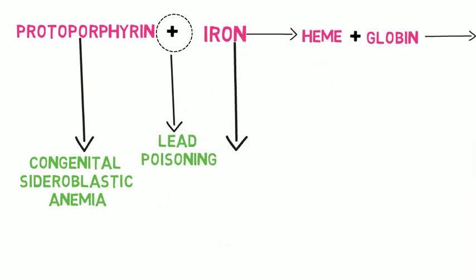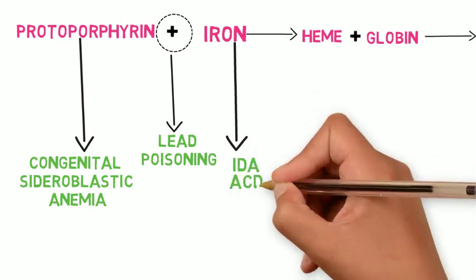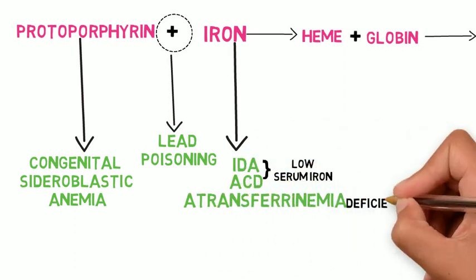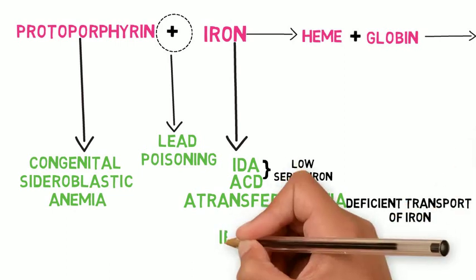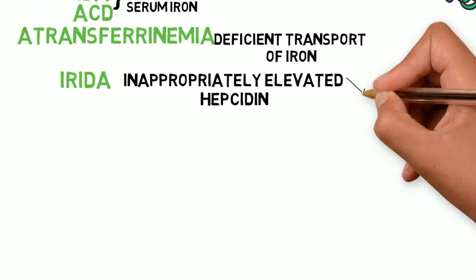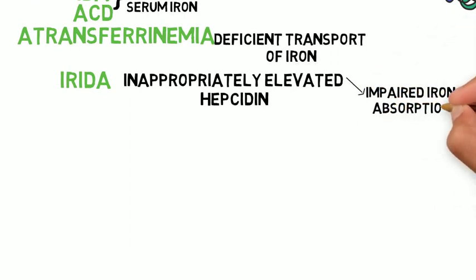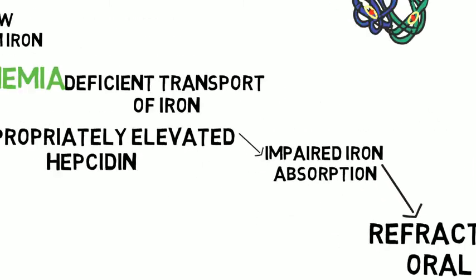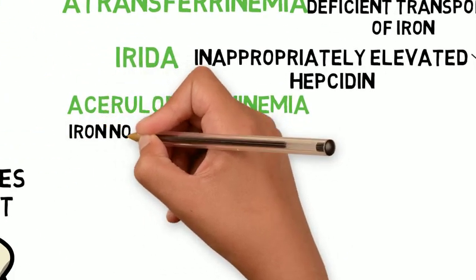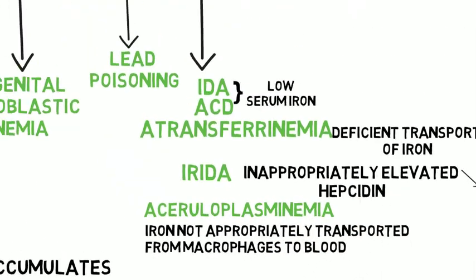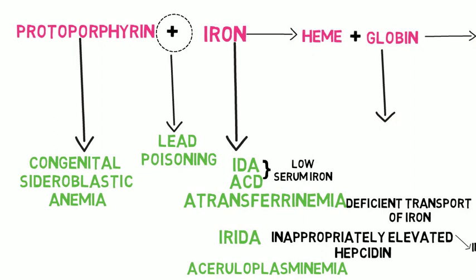Decreased iron delivery can be due to iron deficiency anemia or anemia of chronic disease — both have low serum iron. In atransferrinemia, there is decreased transport of iron due to deficient transferrin. In iron refractory iron deficiency anemia (IRIDA), there is inappropriately elevated hepcidin, which inhibits iron absorption, so patients do not respond to oral iron. In aceruloplasminemia, iron is not appropriately transported from macrophages to the blood for delivery to the bone marrow.